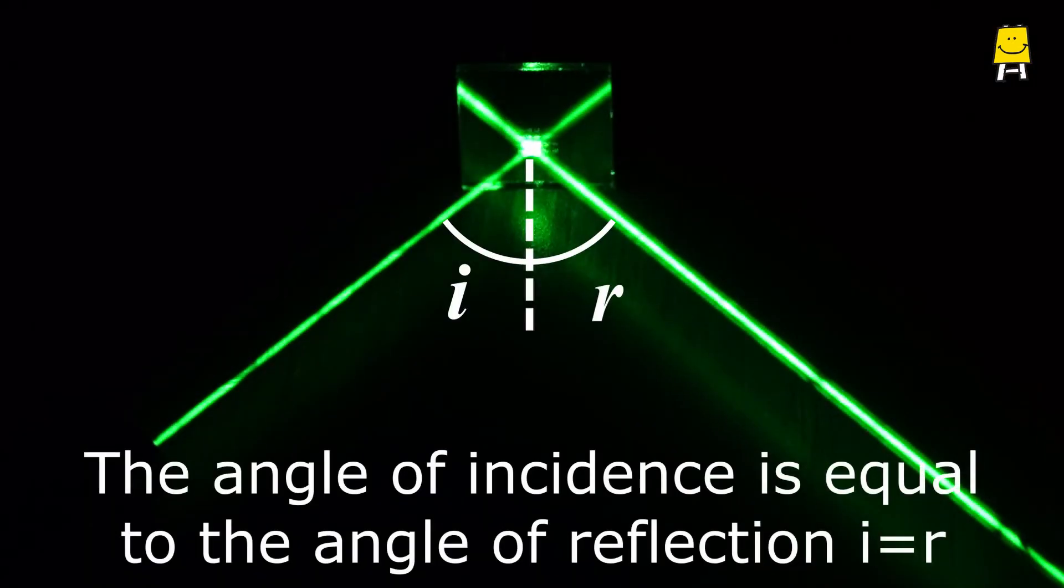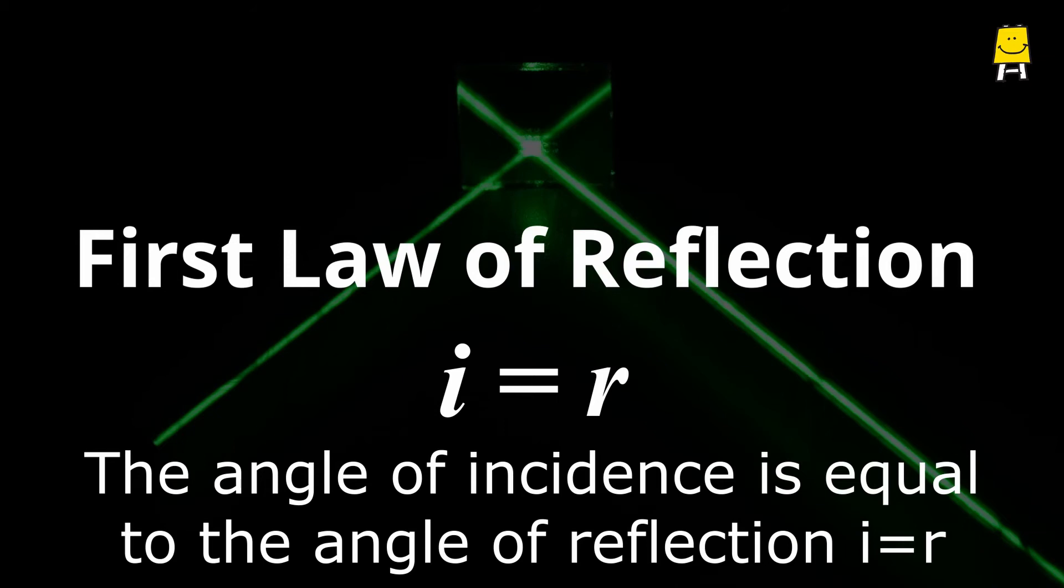You will see that angle i and r are equal when light is reflected from the mirror. This is the first law of reflection.